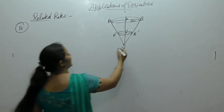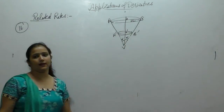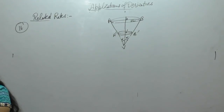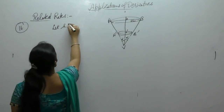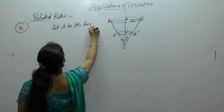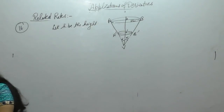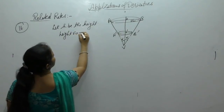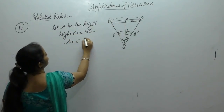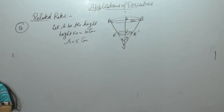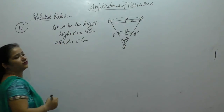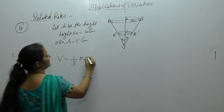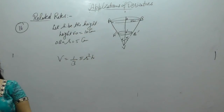Let α be the semi-vertical angle made by the inverted cone. Let h be the height of the water cone. The height VO is given as 10 cm and radius OA is given as 5 cm. The volume of the cone is V = (1/3)πr²h.